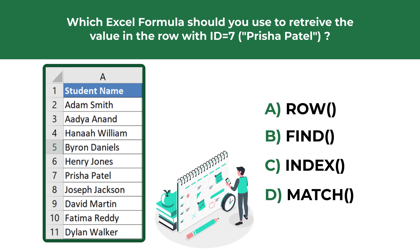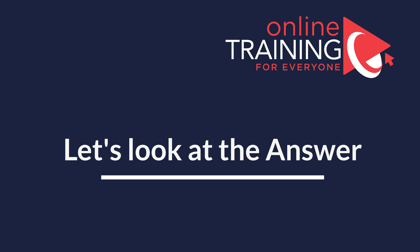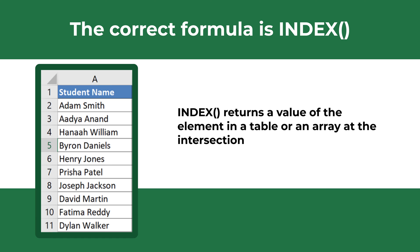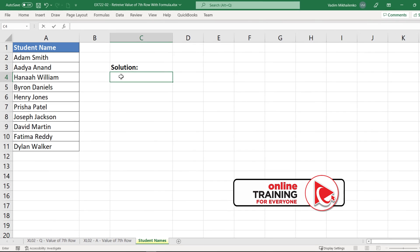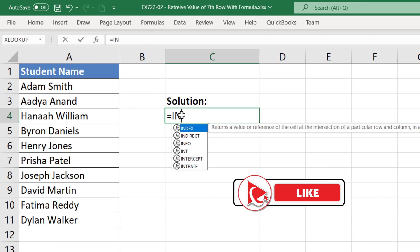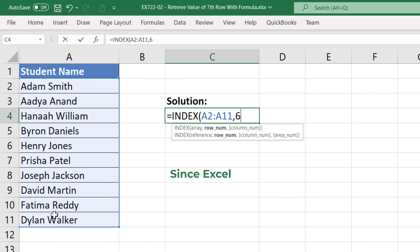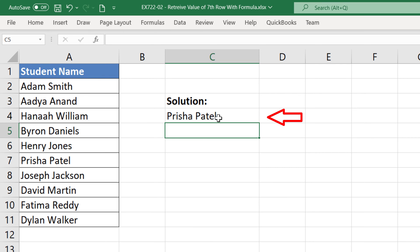Give yourself 10 to 20 seconds and try to pause the video to come up with the right solution. The correct formula is INDEX. INDEX returns a value of the element in a table or array selected by the row and column number indexes. When entering the INDEX formula, you need to enter the array and provide the row number; the column number is optional. To retrieve the value of the row with ID 6, enter the INDEX formula, select the array starting from row 2, and enter the value 6. Once you hit Enter, the correct value is returned.